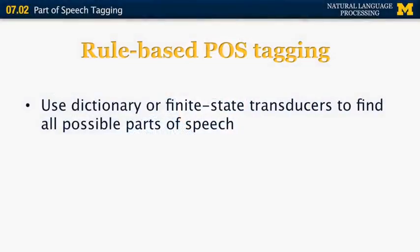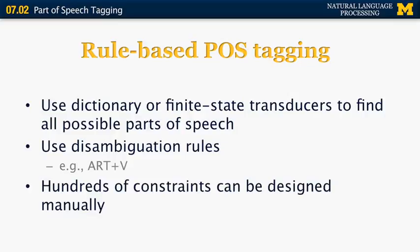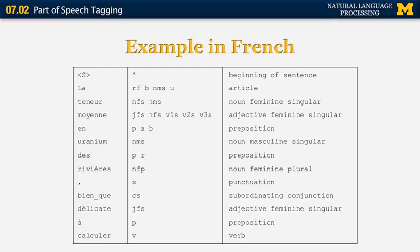Now let's talk about the first type of POS tagging: the rule-based method. It is typically done using a set of finite state automata, specifically finite state transducers, to find all possible parts of speech for a given sequence of words, then using disambiguation rules that make some transitions possible over others. For example, a rule can say that an article can never be followed by a verb. Here's an example from a paper on French POS tagging: 'La teneur moyenne en uranium de rivière, bien que délicate à calculer' — meaning 'the average content of uranium in rivers, even though difficult to compute.'